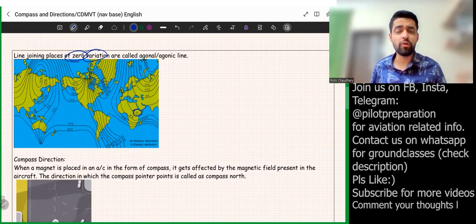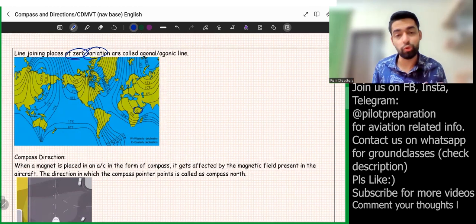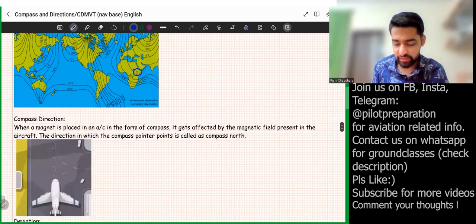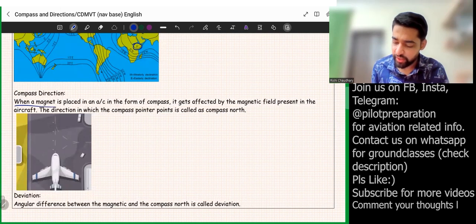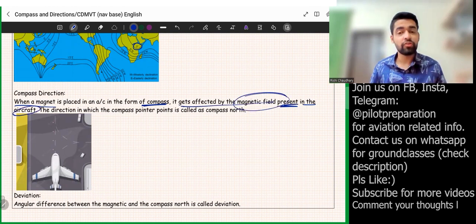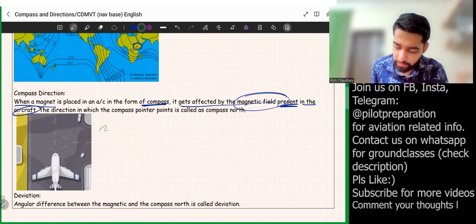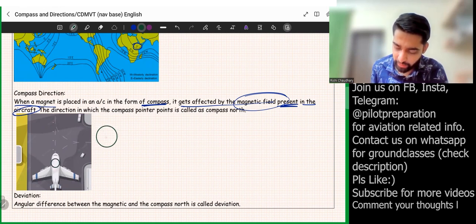Now that we've discussed true direction and magnetic direction, let's discuss compass direction — the third part. When a magnet is placed in an aircraft in the form of a compass, it gets affected by the magnetic field present in the aircraft. This magnetic field makes the compass deviate from the correct magnetic location.